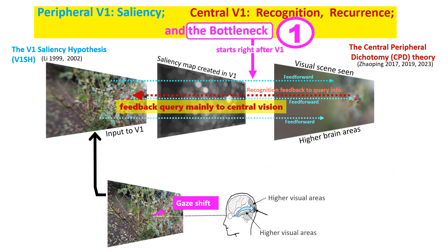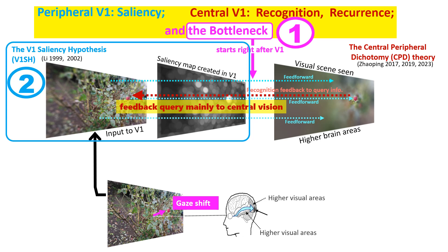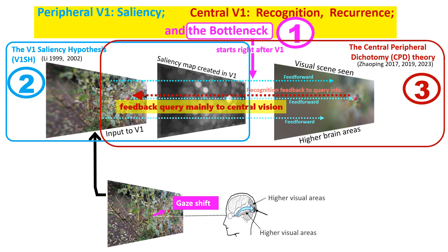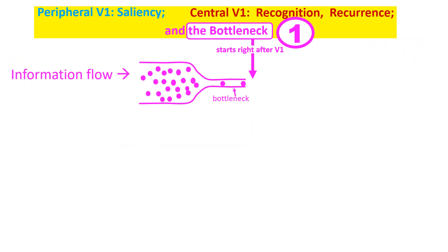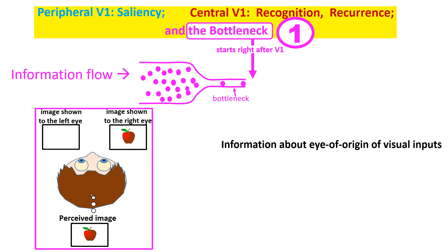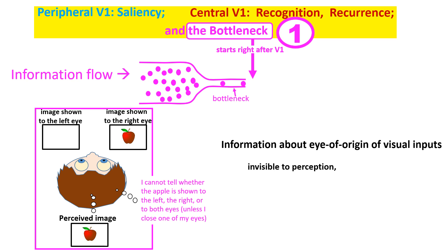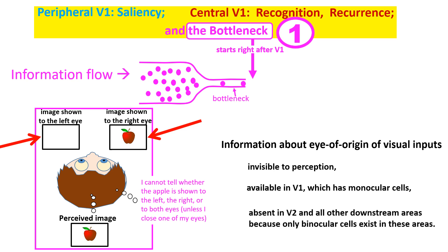The bottleneck motivates both the V1 saliency hypothesis and the central-peripheral dichotomy theory. A diagnostic type of information lost downstream from V1 is the information about the eye of origin of visual inputs. This information is invisible to perception — human observers cannot tell whether visual inputs are shown to the left eye or the right eye. But this information is available in V1, which has many monocular neurons tuned to it, and is lost in V2 and further downstream areas because they have only binocular neurons.